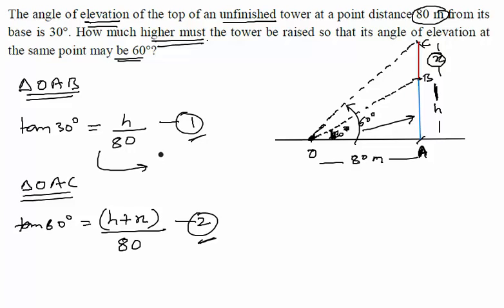So, from equation 1, you can write H as 80 into tan of 30 degrees. But tan of 30 degrees is how much? 1 by root 3, which means that H is equal to 80 upon root 3.